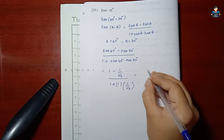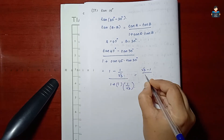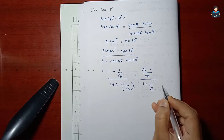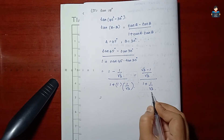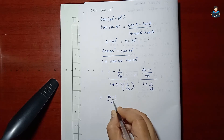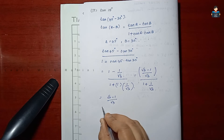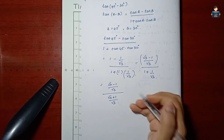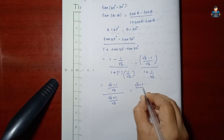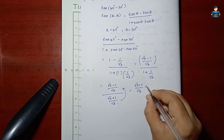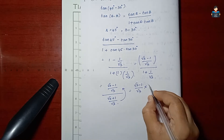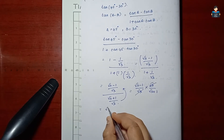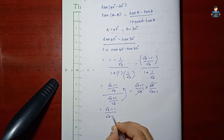Now we do LCM. In the numerator: root 3 minus 1 by root 3. In the denominator: root 3 plus 1 by root 3. So we get root 3 minus 1 by root 3 divided by root 3 plus 1 by root 3, which simplifies to root 3 minus 1 by root 3 plus 1.